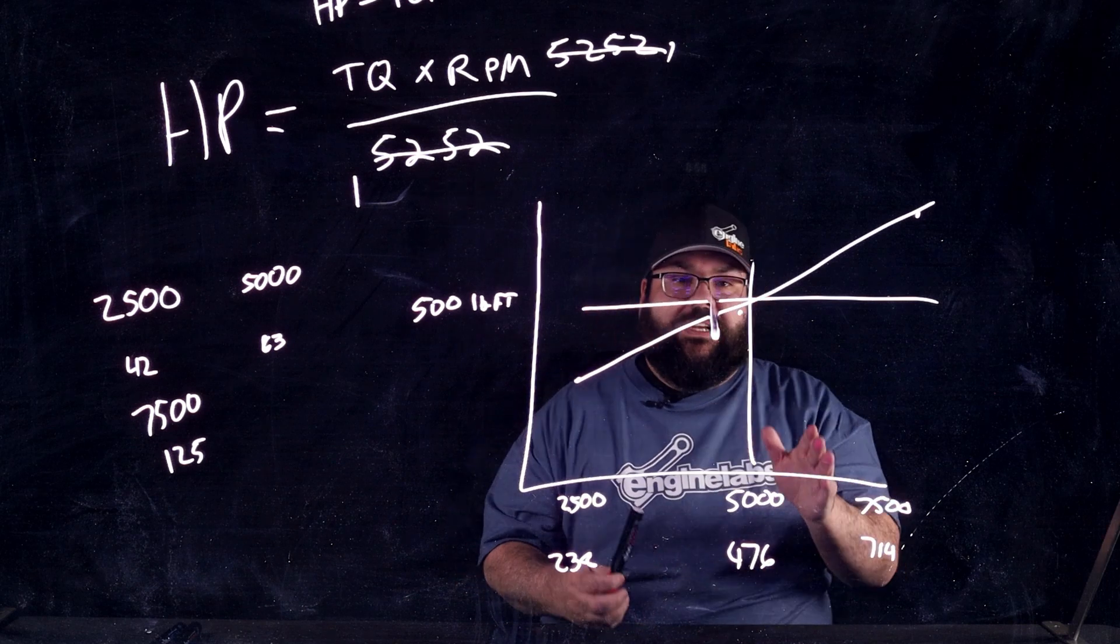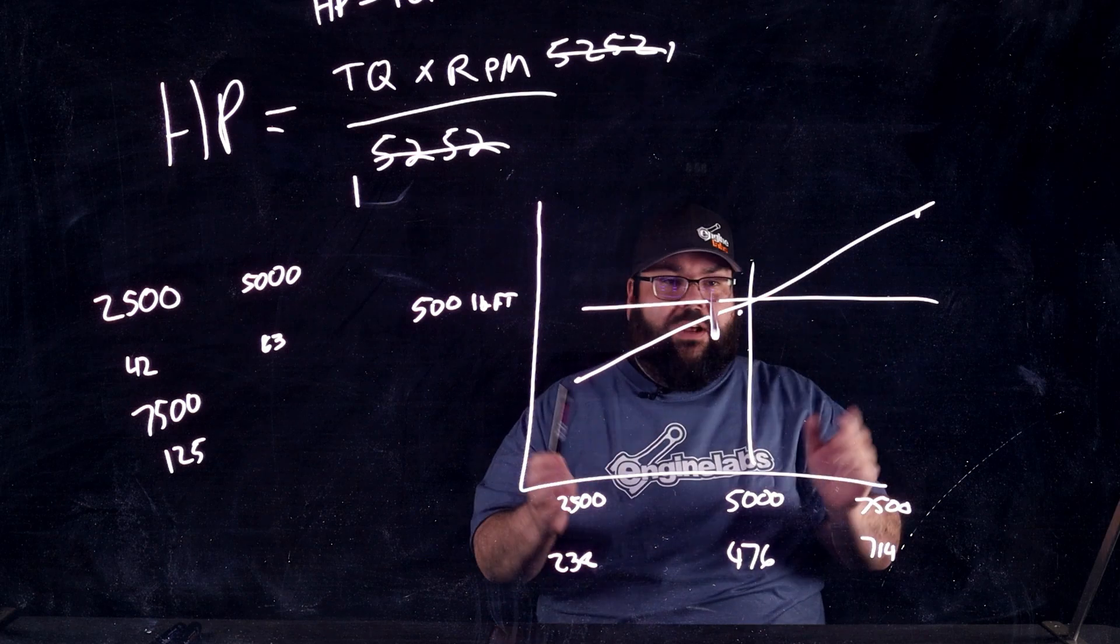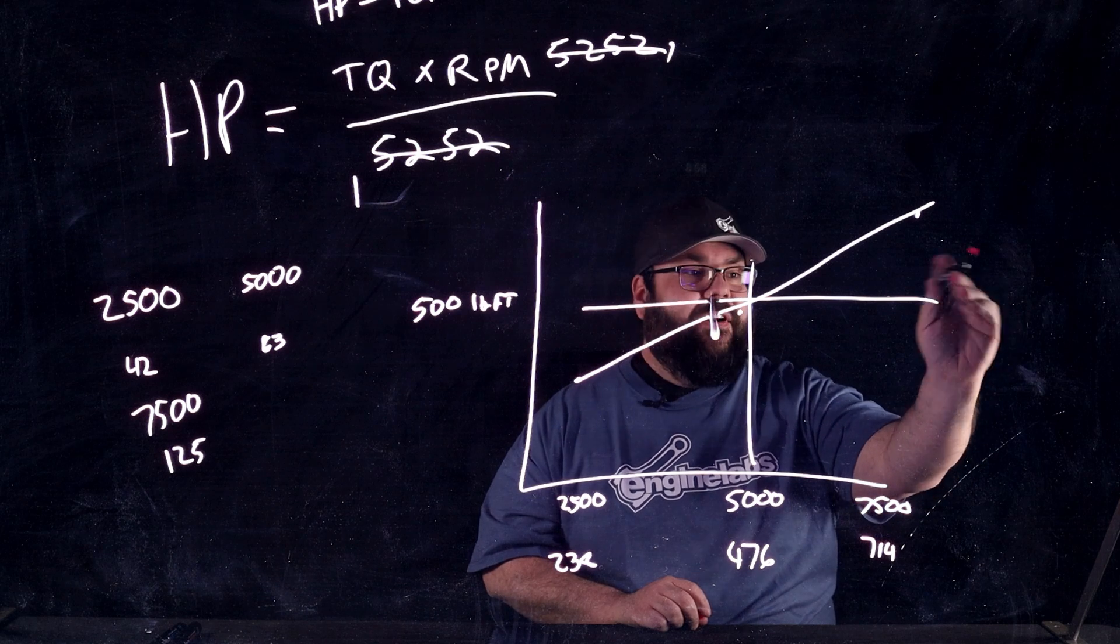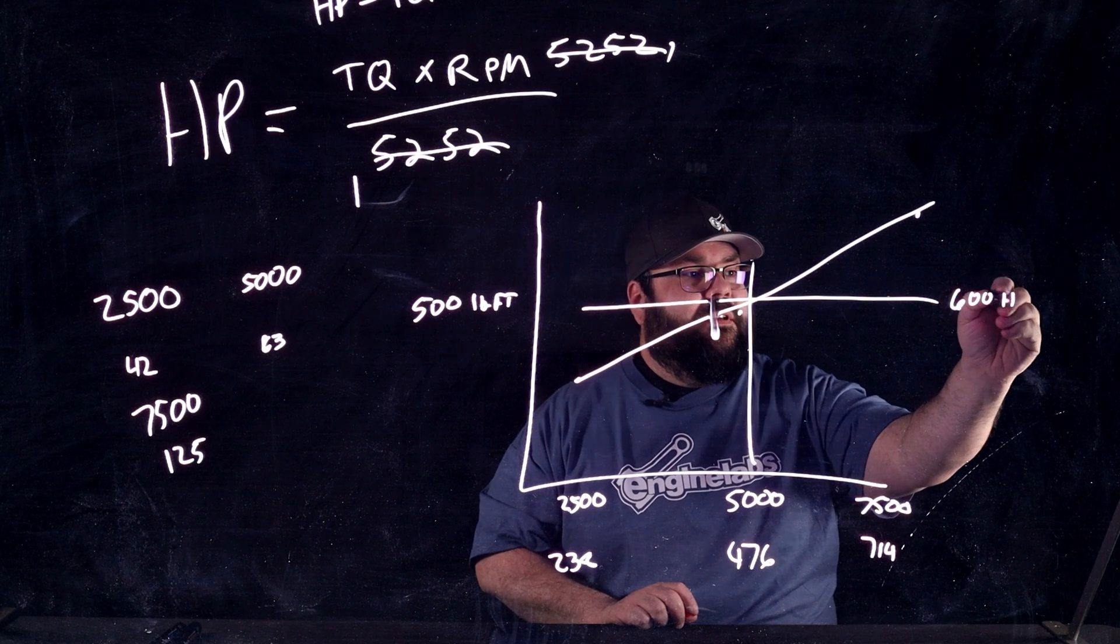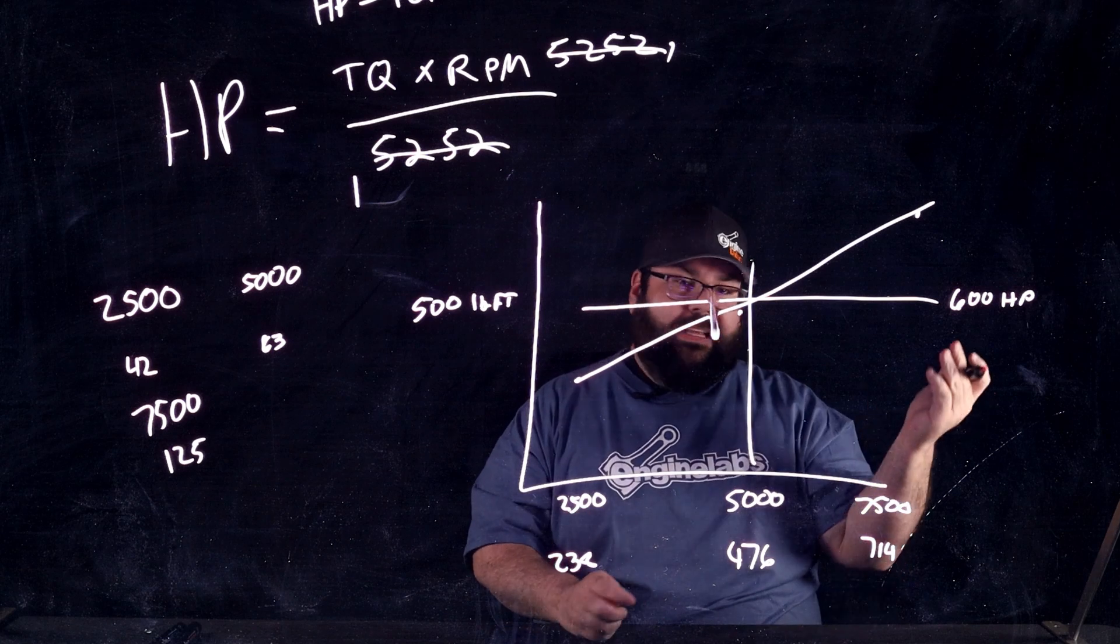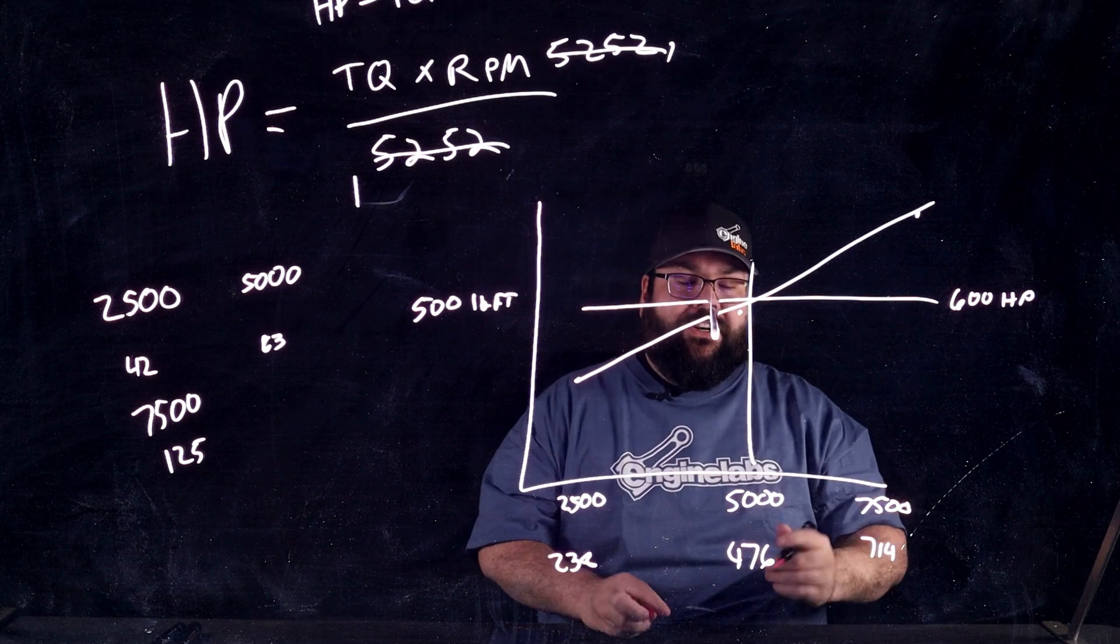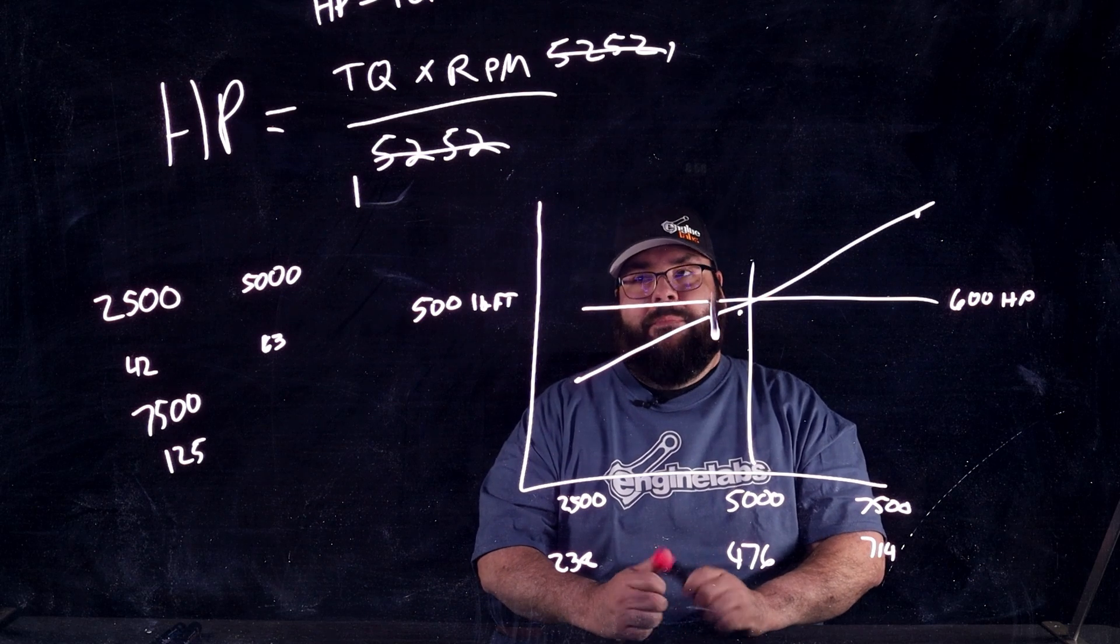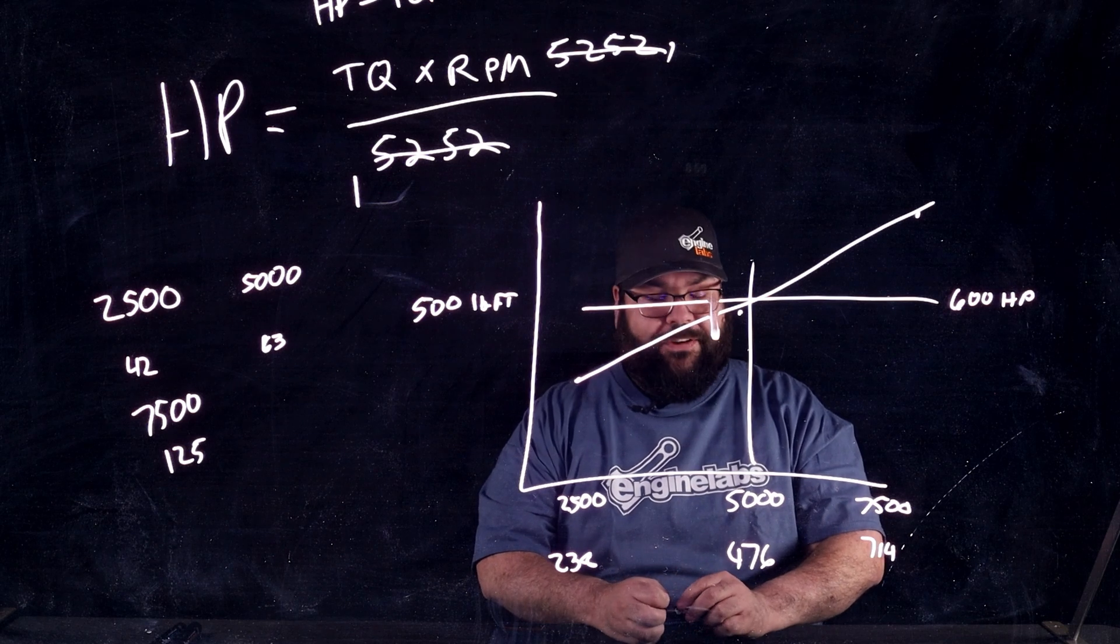Also, there might be a situation where you see that they don't cross, they cross either earlier or later or up or down, whatever. Well, sometimes, some dyno charts will show, instead of this being 500, this will be 500 pound-feet and they'll show a different scale on the right side. Now that, if you were to true up the scales and, you know, slide this up, once again, it's going to cross at 5,252. If it doesn't cross at 5,252, it's a make-believe dyno because the math says it has to cross at 5,252.